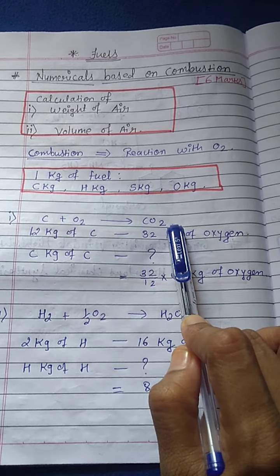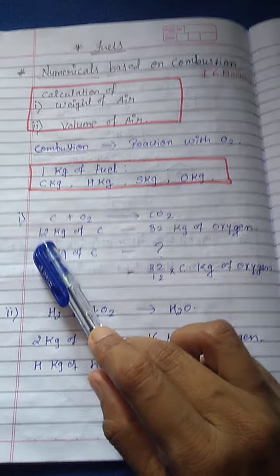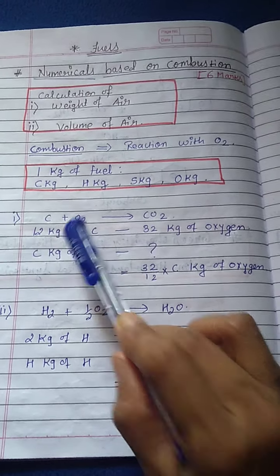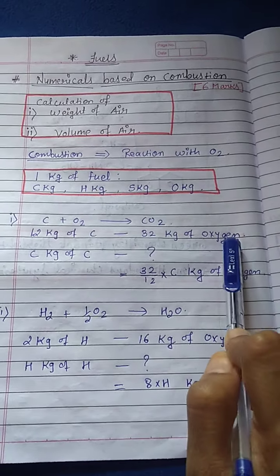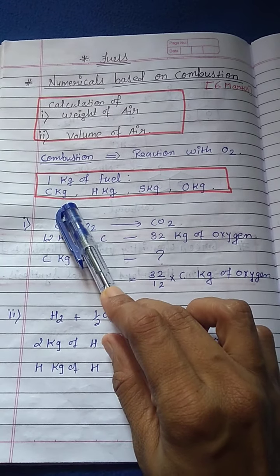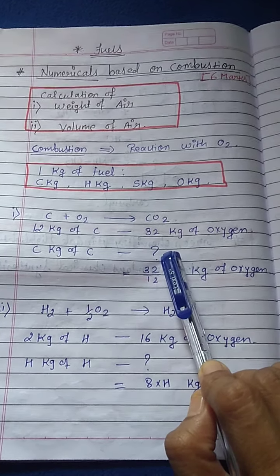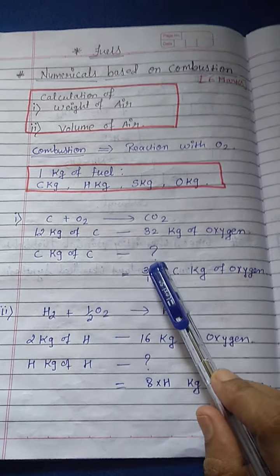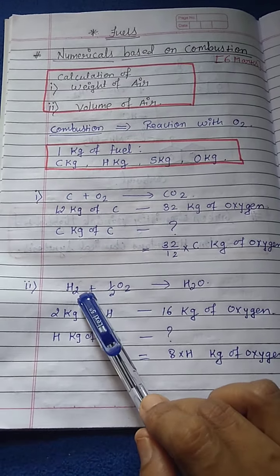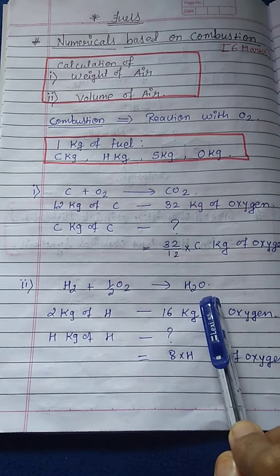The first combustion reaction is for carbon. Carbon reacts with oxygen and forms carbon dioxide. The atomic weight of carbon is 12, so 12 kg of carbon reacts with 32 kg of oxygen (O₂). Next, if fuel contains C kg of carbon, this C kg of carbon will react with 32/12 × C kg of oxygen.